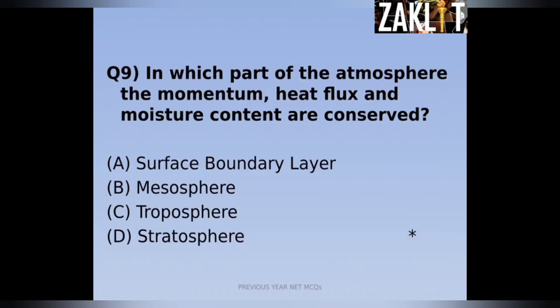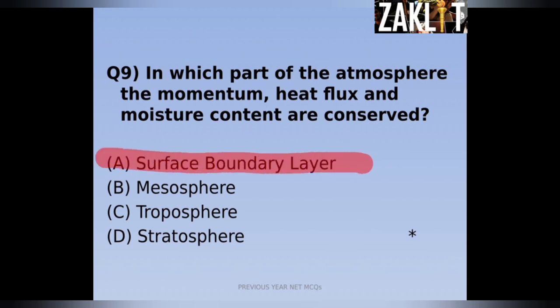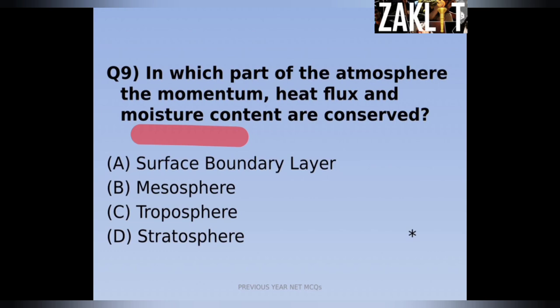The ninth question: in which part of the atmosphere are momentum, heat flux, and moisture content all conserved? The correct answer is option A, the surface boundary layer — all three quantities are conserved there.